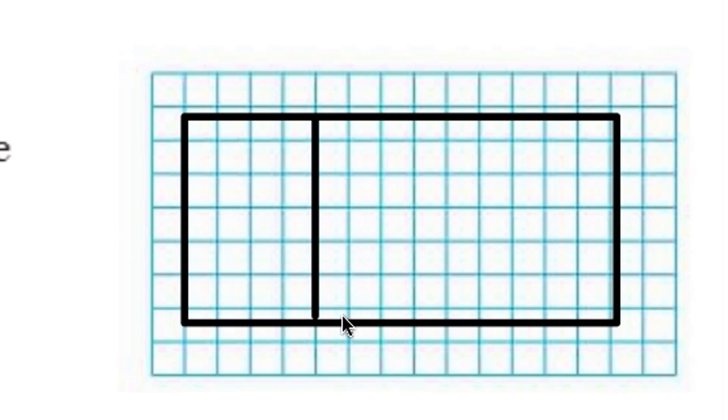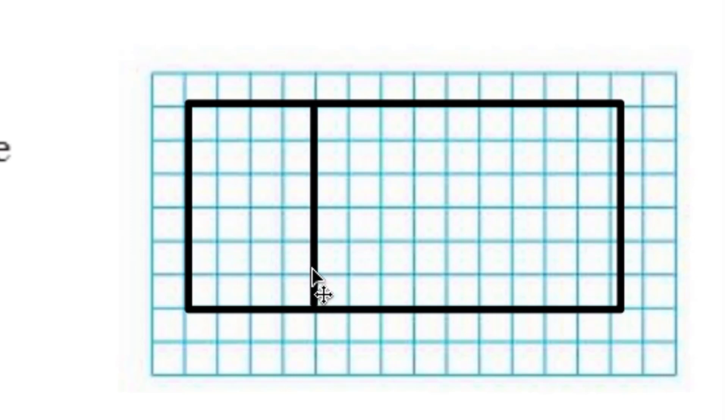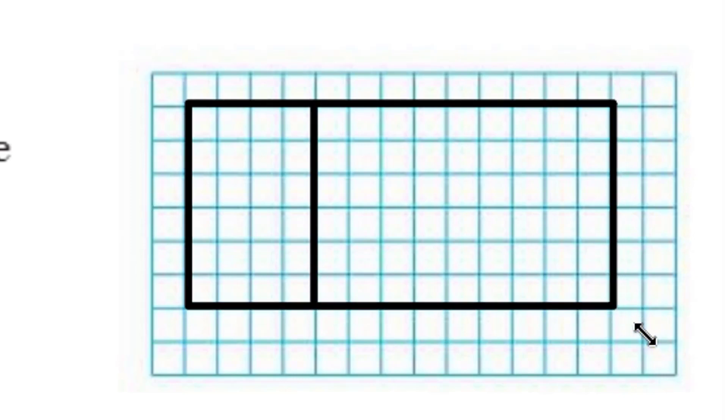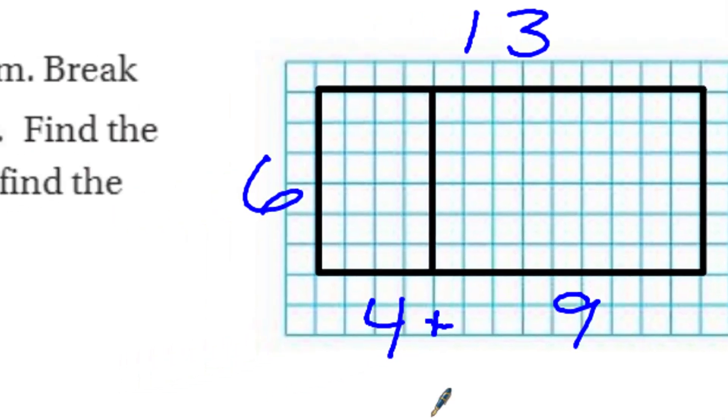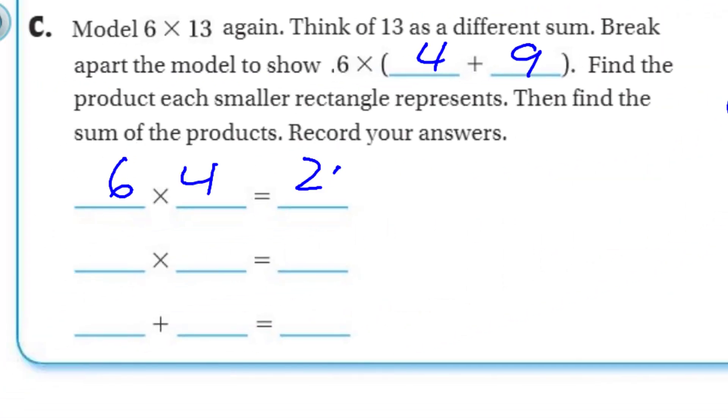And that means there has to be 9 over here. Double check here. It looks like I'm not quite on my line here. I like it to be exact. So now I have my 4, and then I have my 9. Now it says, so I'm going to put my two addends in there. One addend is going to be 4. The other addend is going to be 9. Find the product each smaller rectangle represents. So if we did our 6, I'm going to do exactly how I did it last time, 6 times 13. And I'm going to write down my numbers here. 4, and then I'm going to just put a little plus sign in. And then plus 9. So I know I have the same thing. So I'm going to have 6 times 4 is equal to 24. I'm going to have 6 times 9, which is equal to 54. And now it says I'm going to add my sums together. I have 24 plus 54, which is equal to 78.